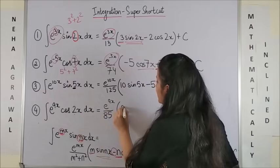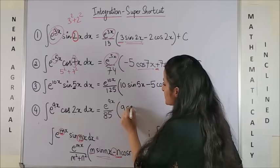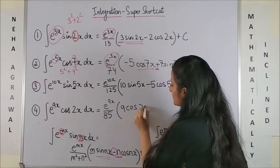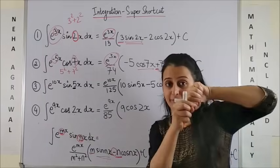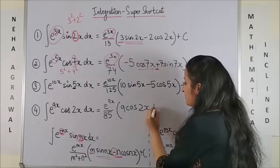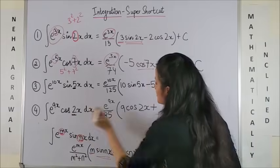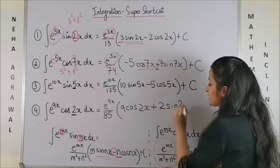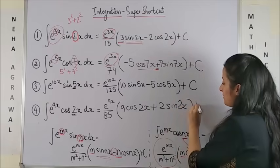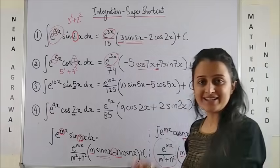and now you write this 9 as it is into cos 2x. And since it is a cos function, so there will be a plus sign and we get plus, you copy this 2 as it is into sin 2x plus c. Please have a look.